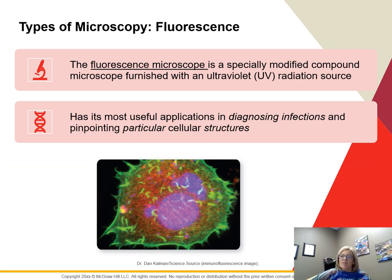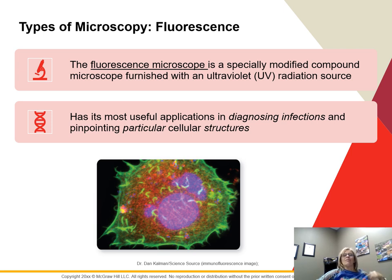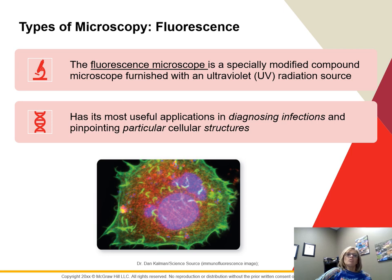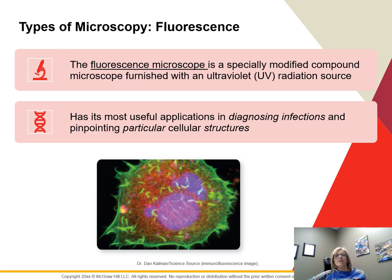The fluorescent microscope is a modified compound microscope with a UV light source. It uses fluorescent dyes — fluorescent acridine and different minerals that fluoresce on their own. The dyes emit visible light when excited by ultraviolet radiation. The specimen is coated with fluorescence, and the UV causes it to give off its own light to form an image. The images are usually intensely red, green, or blue on a dark background. This is really useful for diagnosing infections and looking at particular cell structures.